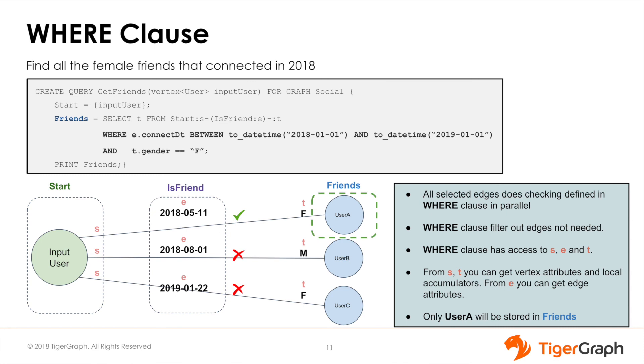So in our Friends vertex set, only user A will be stored and only user A will be printed in the end. So today we learned the basics of the SELECT statement along with how to use the WHERE and AND clauses.